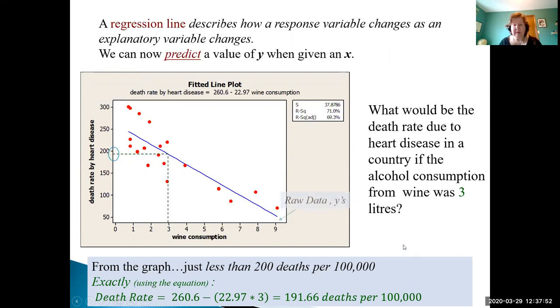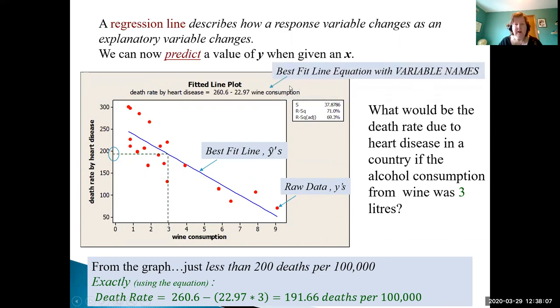Just to recap a few things on our graph: the red dots are our y data, our y and x values. What's on the blue line is our best fit line, our predicted y values for a given x. Up here we have the equation or the best fit equation.